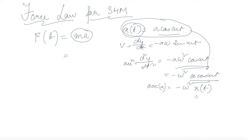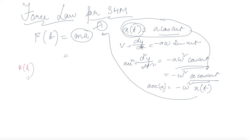Now, putting the value of acceleration into equation one, F = ma, we get F(t) = -mω² x(t). This is the force law for simple harmonic motion expressed in terms of mass, angular frequency, and displacement.